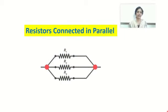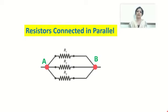When the resistors are connected one below the other between two common points, they are said to be connected in parallel. In the figure on the screen, you can see that the two common points are A and B, and between these two common points each end of resistors R1, R2, and R3 is joined, so these three resistors are connected in parallel.